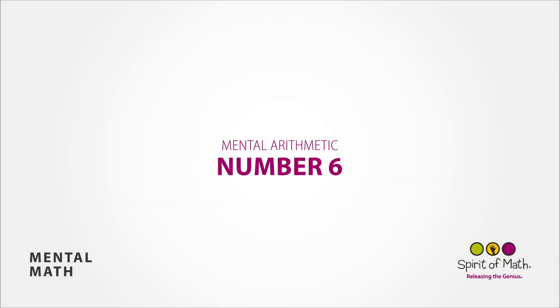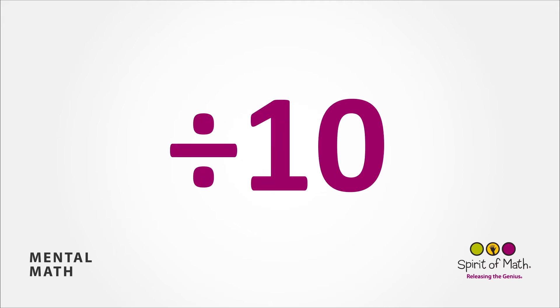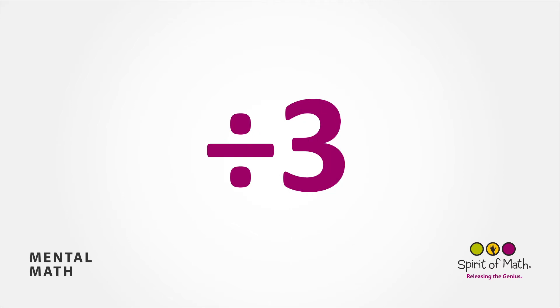Mental Arithmetic Number 6. 1, multiply it by 2, subtract 1, multiply it by 2, subtract 5, subtract 1, multiply it by 7, subtract 6, and add 7, and multiply it by 3, and subtract 2.